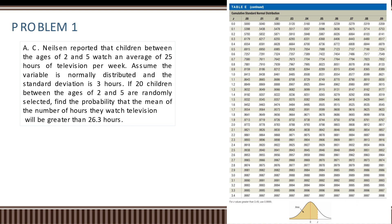AC Nielsen reported that children between ages of two and five watch an average of 25 hours of television per week. Assume that the variable is normally distributed and the standard deviation is three hours. If 20 children between ages two and five are randomly selected, find the probability that the mean of the number of hours they watch television will be greater than 26.3 hours.